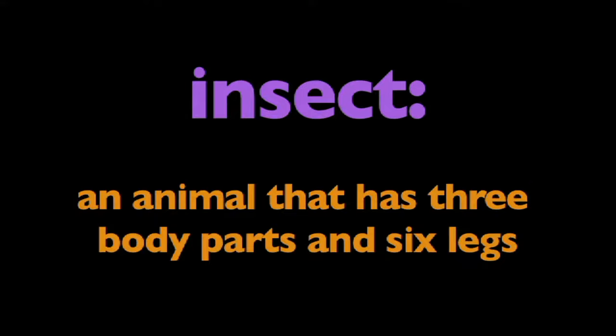In this program, we're going to learn about insects. What is an insect? An insect is an animal that has three body parts and six legs.